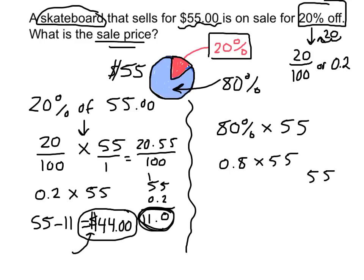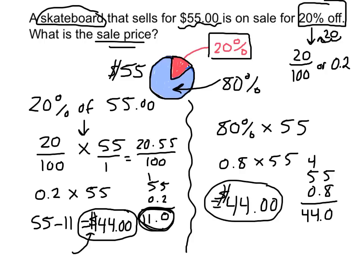I can work this out over here. It will give me the price of the item, the new price of the item after the discount. 8 times 5 is 40. Carry the 4. 8 times 5 is 40. Plus 4 is 44. Bring down the 0. So I got 44. So the price of the item after the discount is $44. That's what I got before. Only there's a little less work involved.